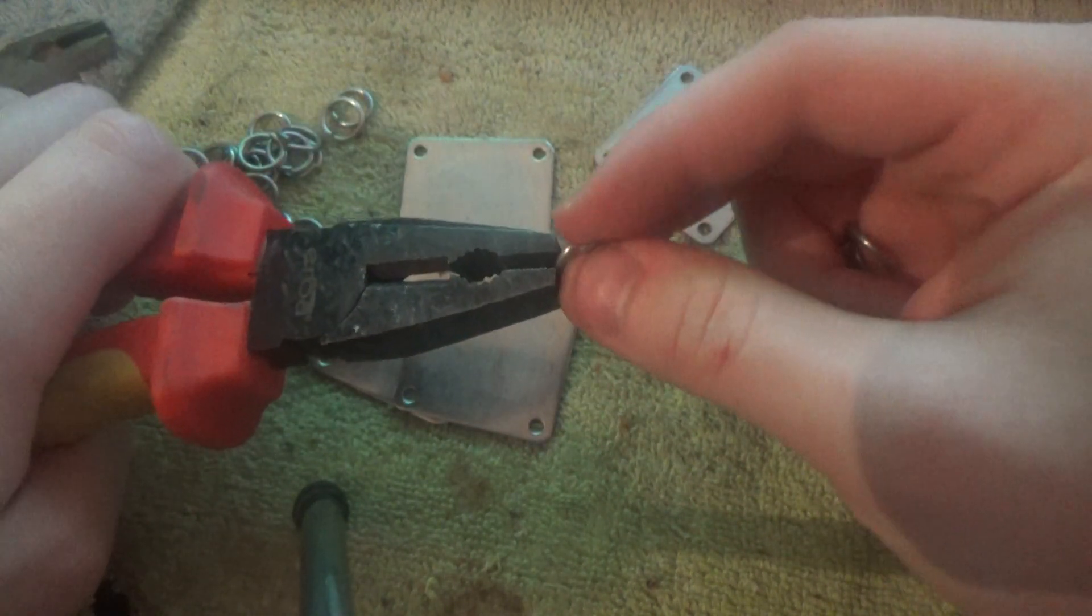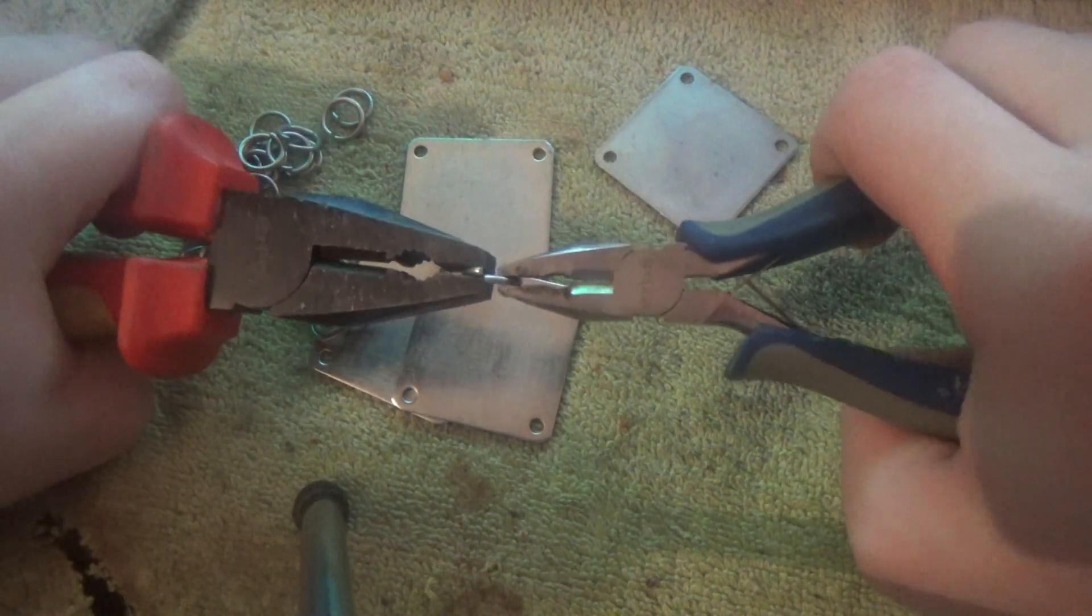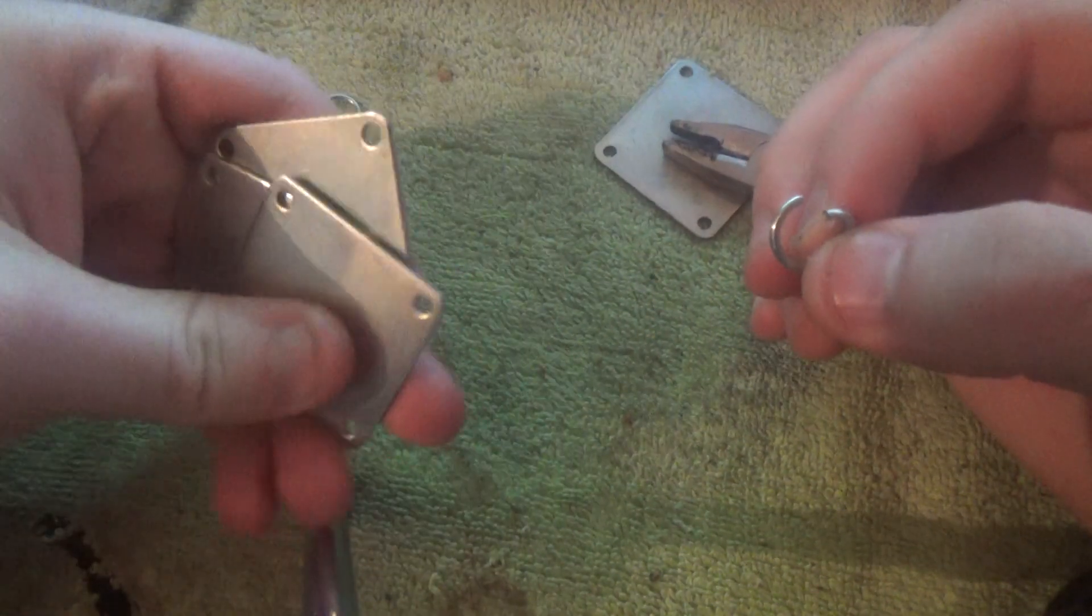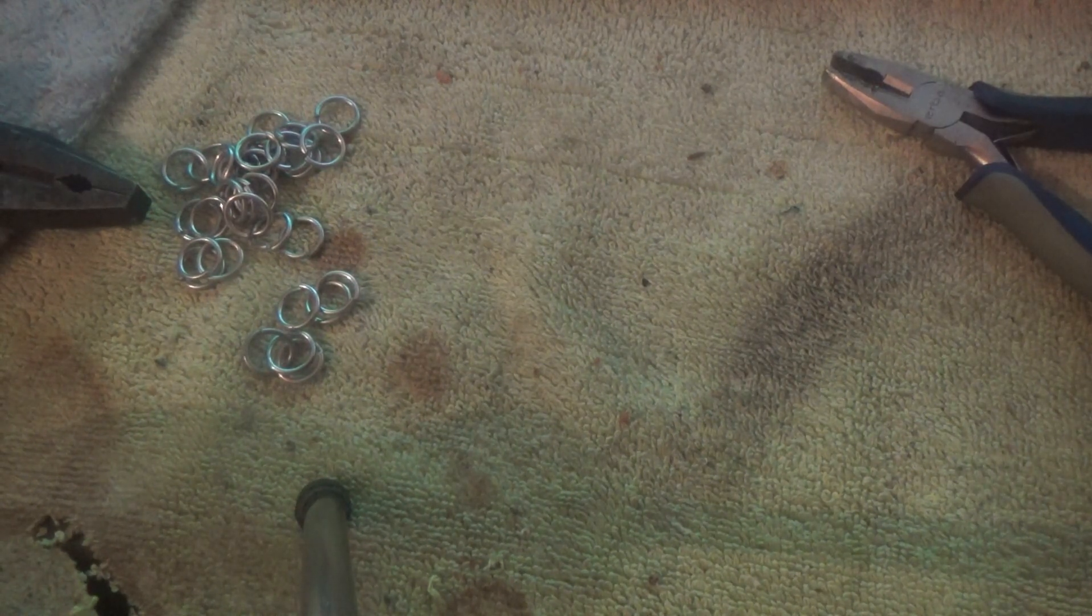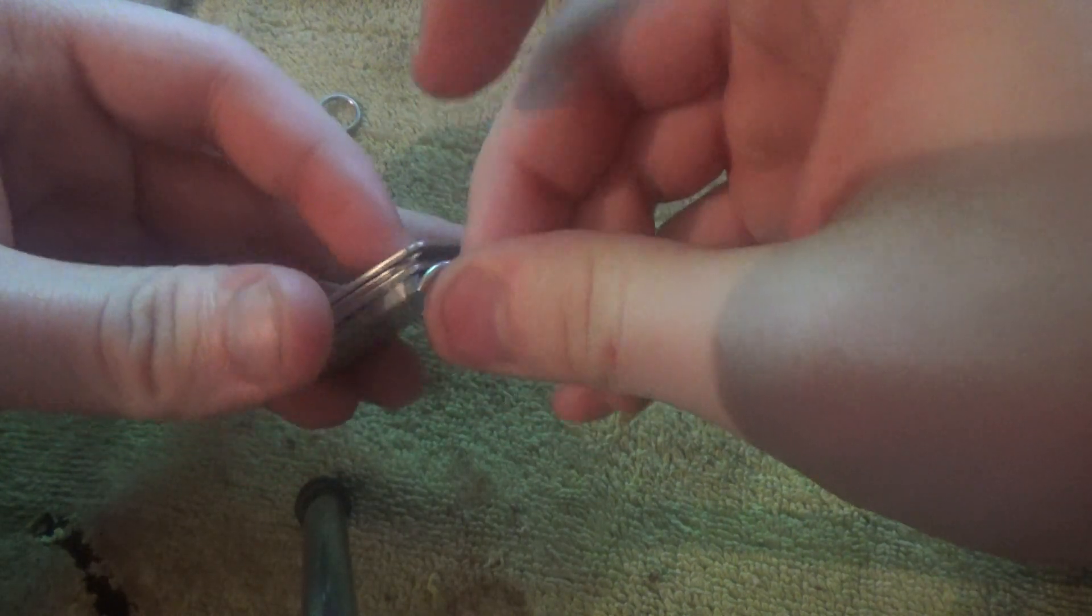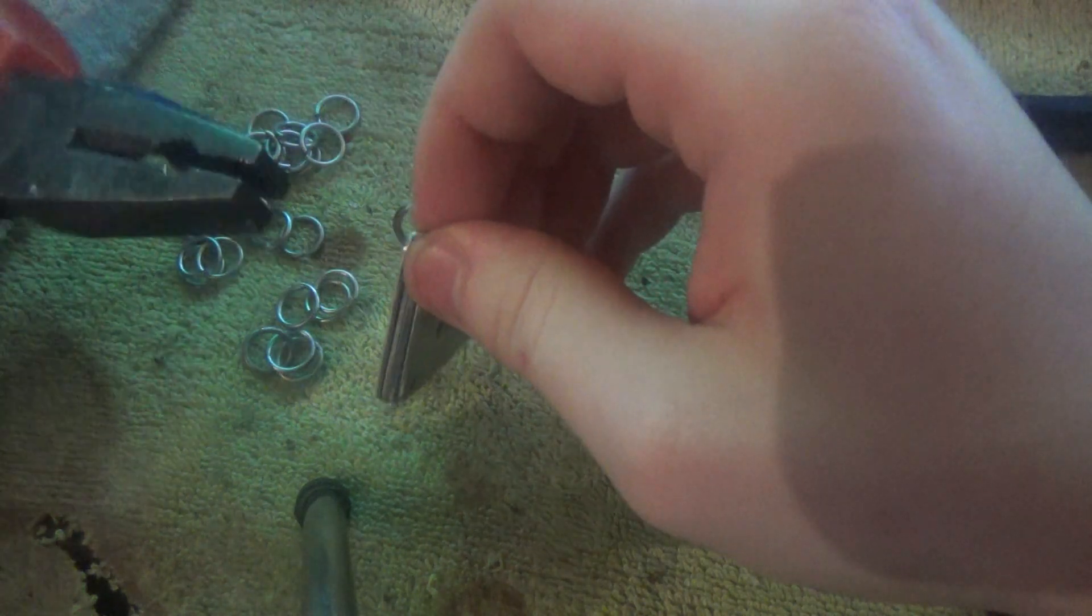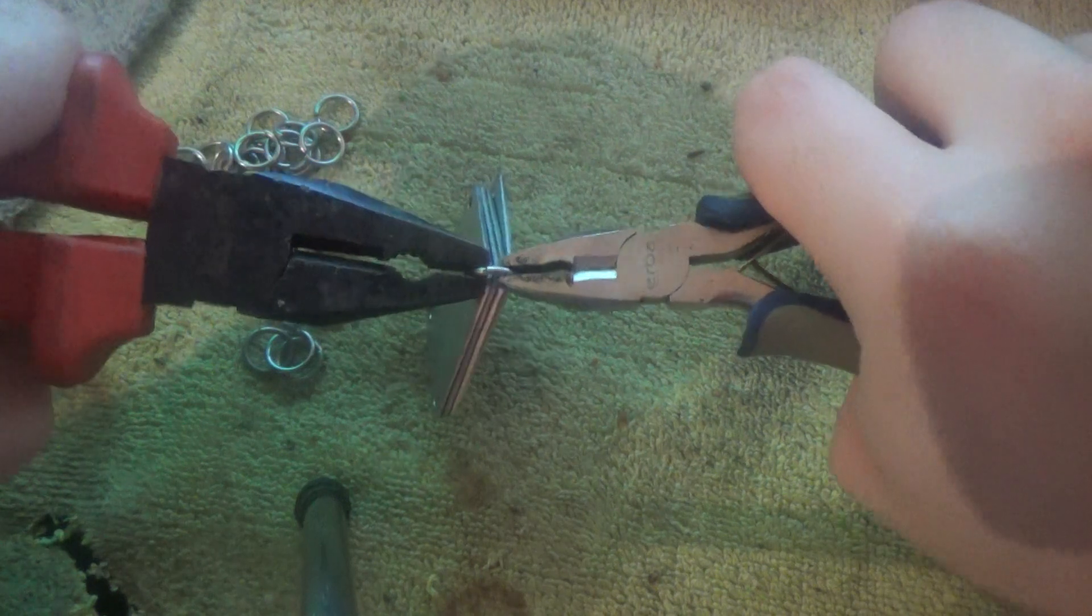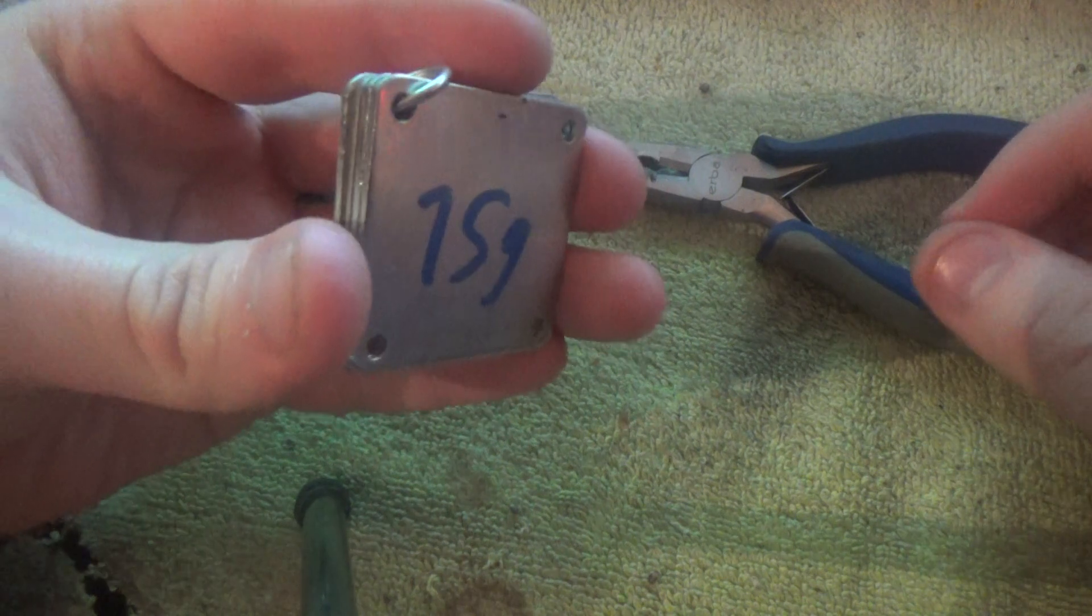Basically you just open it like this, then you get four scales, put them together in one package, and put one of those rings through it. Use your two pliers and close the ring like this. And that's basically all you need to do.